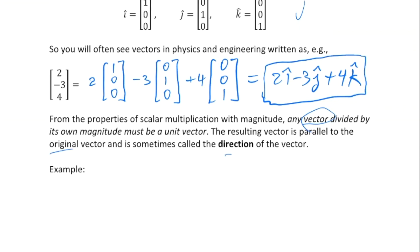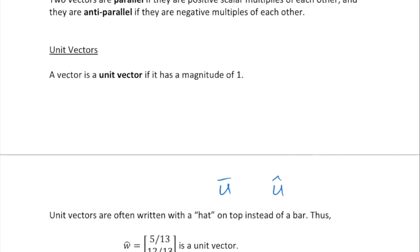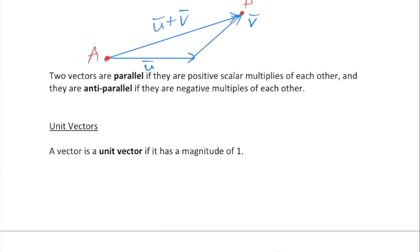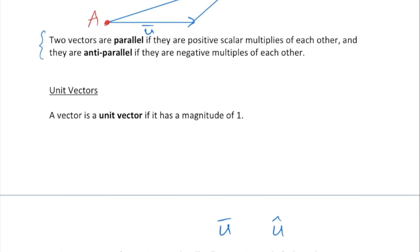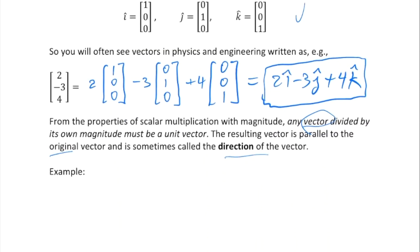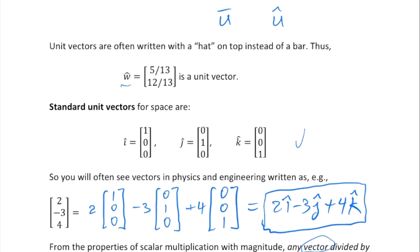Two vectors are parallel if they are positive scalar multiples of each other and are anti-parallel if they are negative multiples of each other. If they're parallel, they have the same direction. If they're anti-parallel, they are oppositely directed.